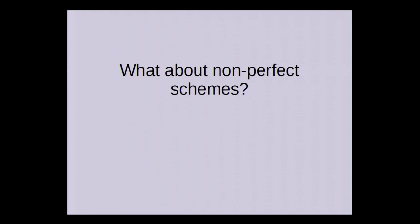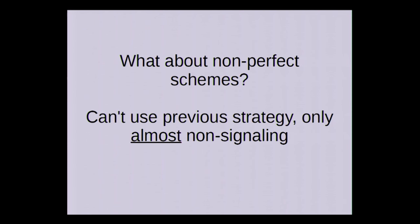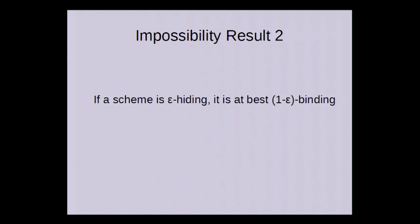So a natural follow-up question is what about non-perfect schemes? Maybe we can weaken the hiding property just a little bit and get a big improvement in the binding property. What might encourage us here is that the proof before crucially relies on the perfectly hiding condition because if the scheme is only almost perfectly hiding then it's also only almost non-signaling but almost non-signaling is not good enough. However, it turns out that that's not true. So if a scheme is epsilon hiding then it is at best one minus epsilon binding. So if this epsilon is small then the provers can win almost all of the time.